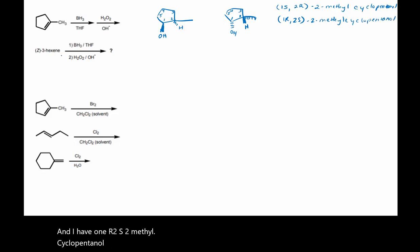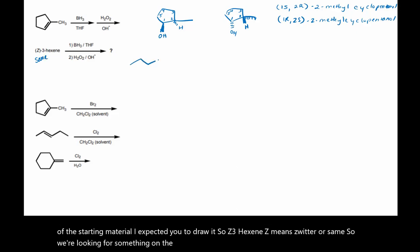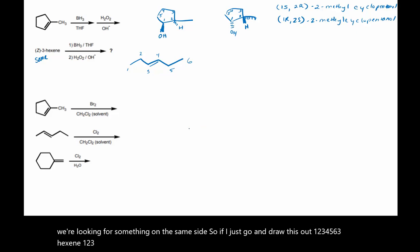Now for this hydroboration oxidation, I didn't give you the structure of the starting material — I expected you to draw it. So Z-3-hexene: Z means same, so we're looking for something on the same side. If I draw this out: 1, 2, 3, 4, 5, 6 — 3-hexene looks like this. But this is not Z-hexene, this is E-hexene. E is when they're on opposite sides.